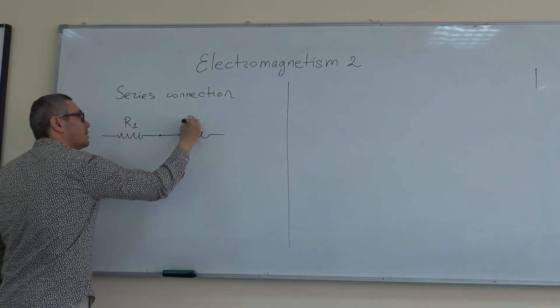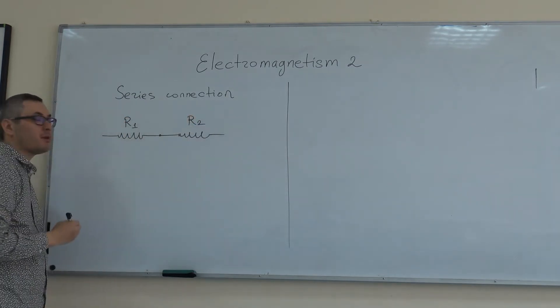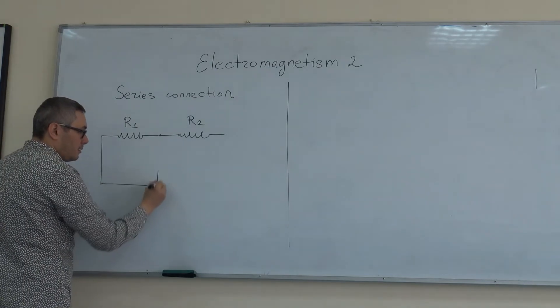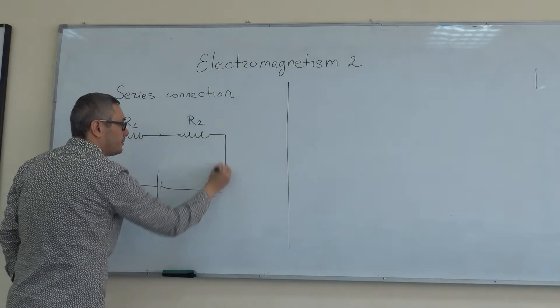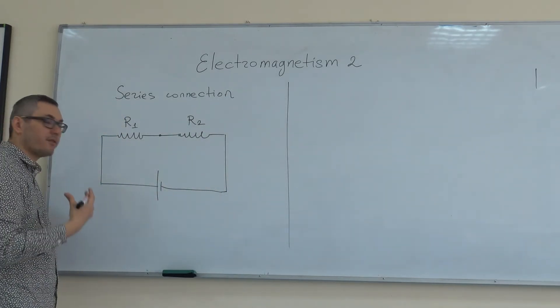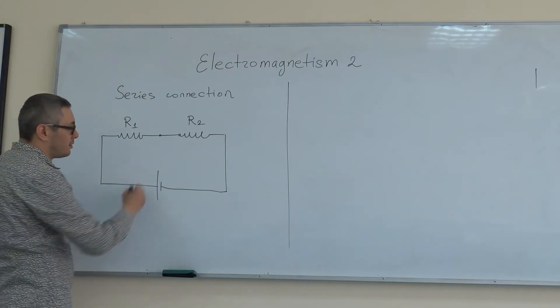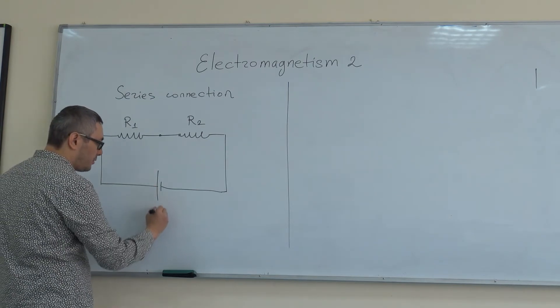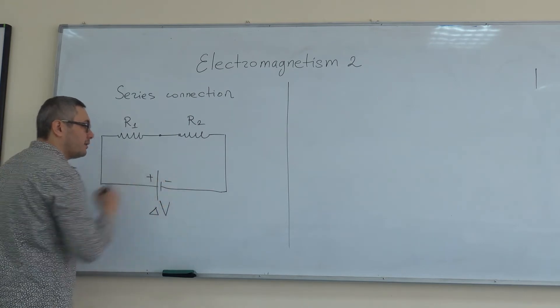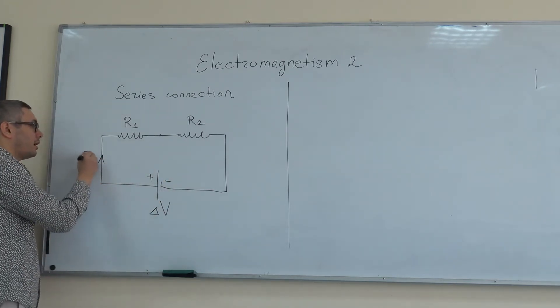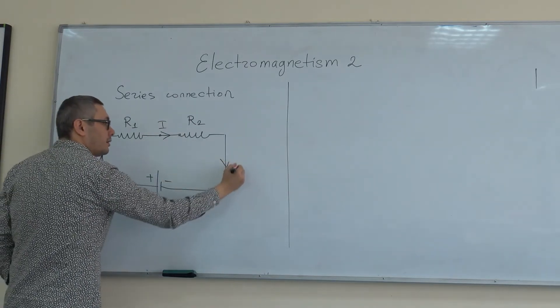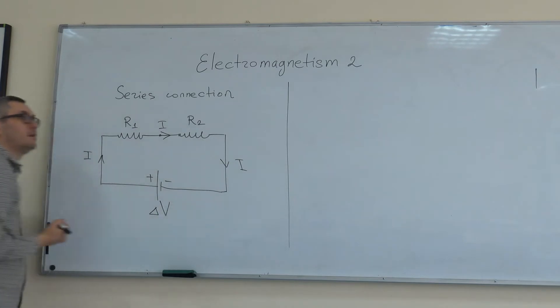This is R1 and this is R2. We can now connect this combination to a battery. Let's say that the battery is ideal, so it doesn't have any internal resistance. The voltage of the battery is Delta V. This side is positive, this side is negative, so the current I flowing in the circuit is flowing clockwise.